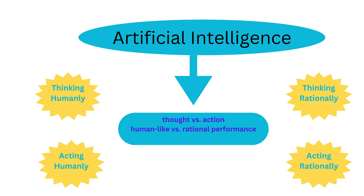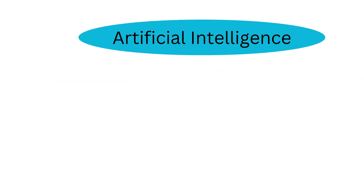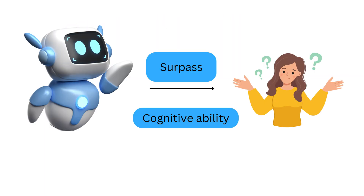Artificial intelligence, or AI, is a term that evokes wonder and speculation. It represents efforts to replicate or surpass human cognitive abilities in machines.